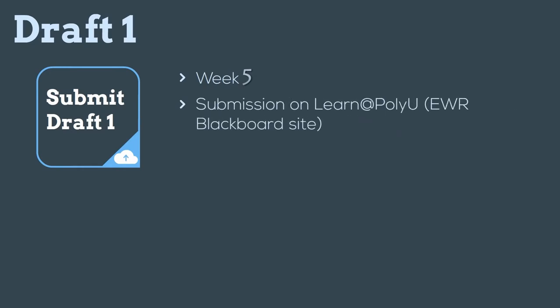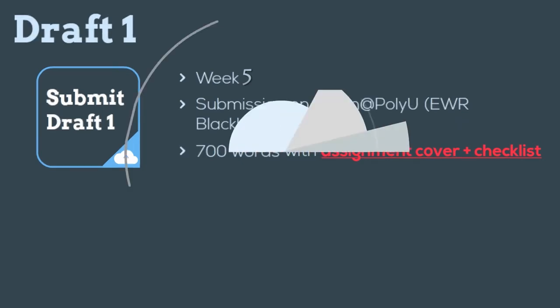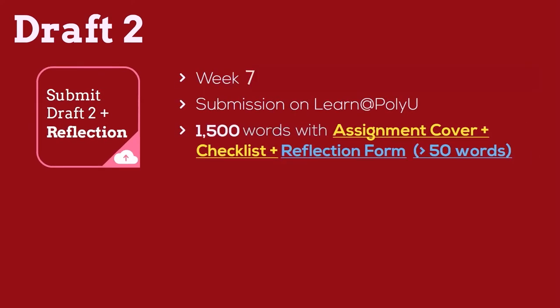Before the deadline, please submit your work to the EWR Blackboard site. This draft should be 700 words long. You have to submit your draft with a cover page and a checklist. For Draft 2, you need to write 1,500 words. Again, please submit your work with a cover page and a checklist. You will also be asked to complete a reflection form online when you do the submission — a simple form to tell us more about your writing experience.